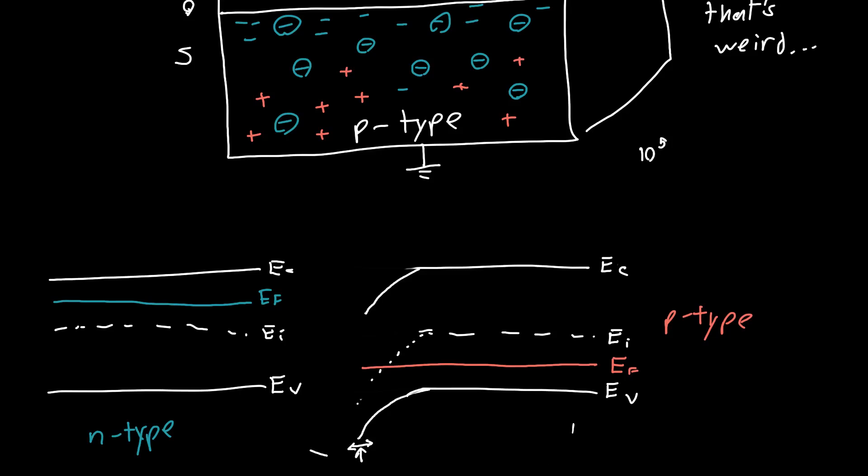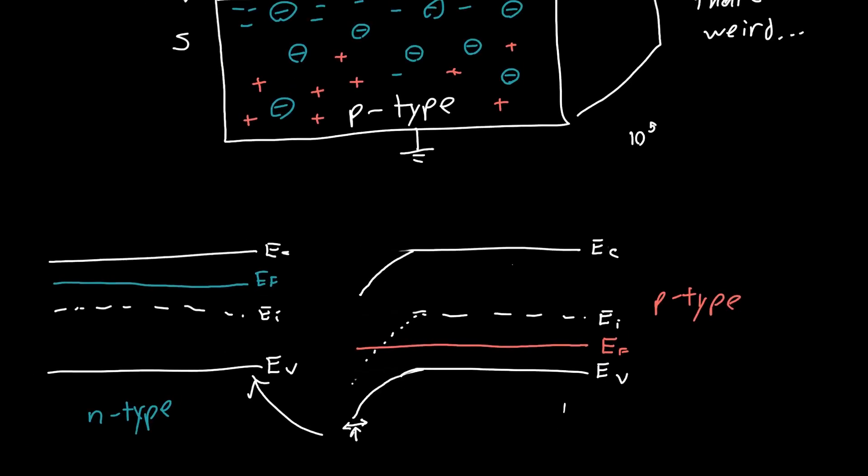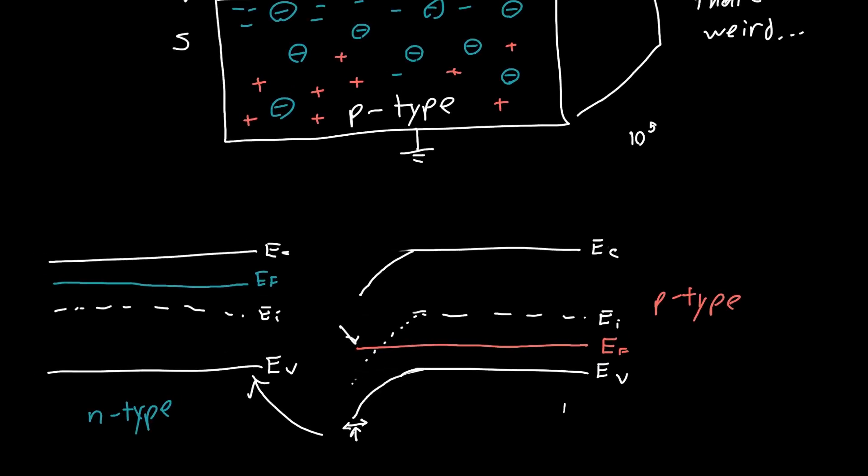The fermi level Ef is above Ei. So near the surface, if this is the oxide semiconductor interface for example,